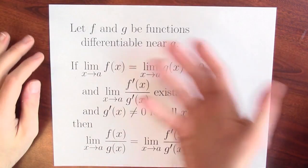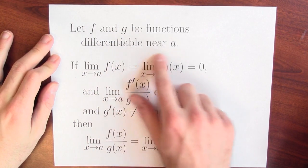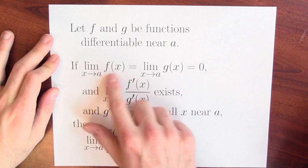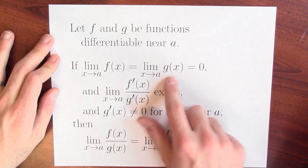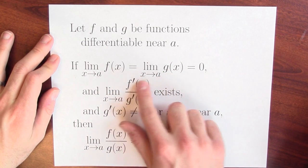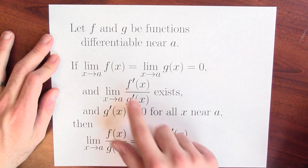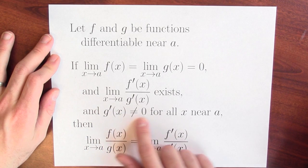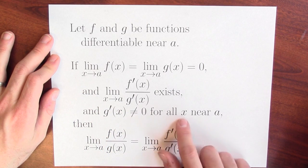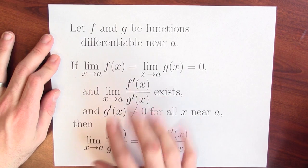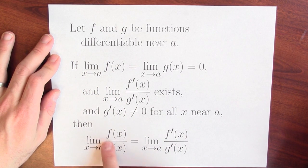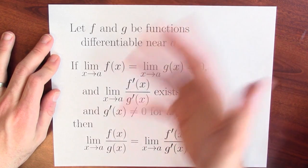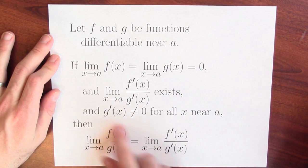The precise statement of this is usually called L'Hôpital's Rule. Suppose I have two functions f and g that are differentiable for inputs near a, and the limit of f(x) and the limit of g(x) as x approaches a are both 0. And the limit of f'(x) divided by g'(x) as x approaches a exists, and g'(x) is not 0 for inputs near a. If all these conditions are true, then I get the fantastic conclusion that the limit of f(x) over g(x) equals the limit of f'(x) over g'(x). The hope is that this limit is easier to compute than the original.